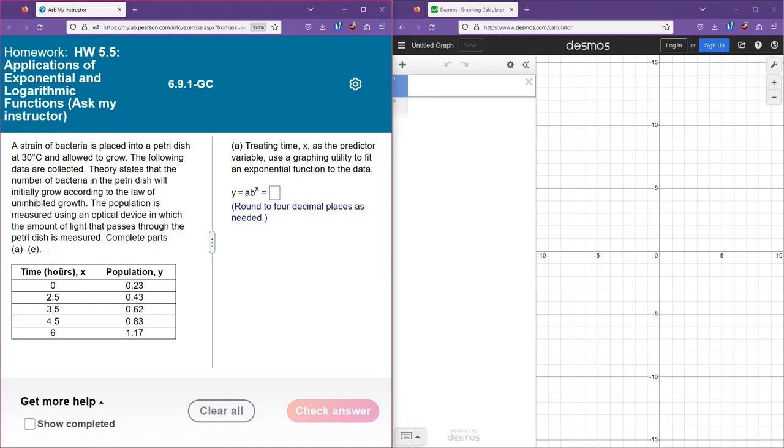So here's the data that was collected. On the initial reading using the optical device, we see that we have 0.23 for our population, the amount of light that passes through. After 2.5 hours, 0.43, 3.5 hours, 0.62, 4.5 hours, 0.83, and after 6 hours, we have 1.17.